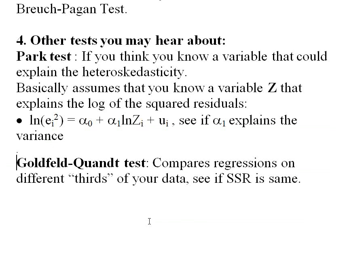Another test you'll sometimes run into is called the Goldfeld-Quandt test. The Goldfeld-Quandt test runs three regressions. You sort your data — normally by the dependent variable — from smallest to largest: small values like a small price of a product, an intermediate region, and the high prices, divided into thirds. Then you run three different regressions, calculate the sum of squared residuals for each of those three parts of your data, and see if the sum of squared residuals is the same for each. If in one of those regressions the sum of squared residuals is much larger than in the other two, that's evidence of heteroscedasticity.